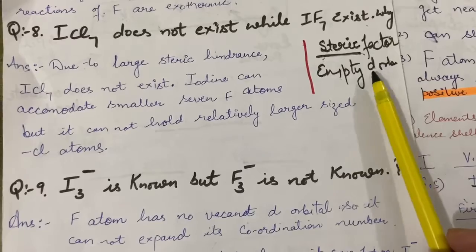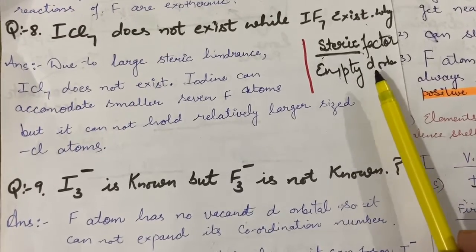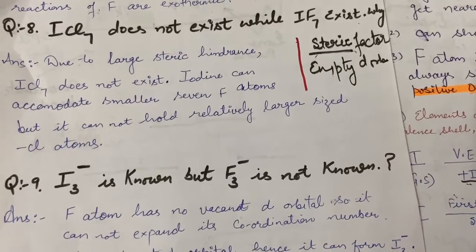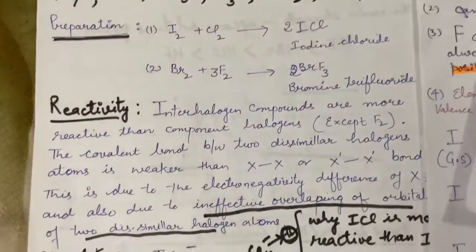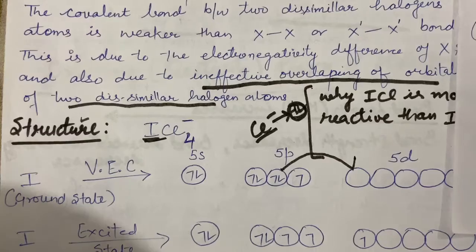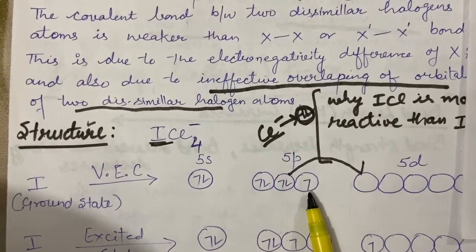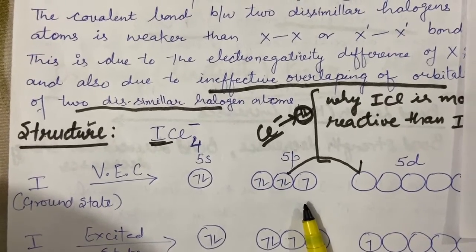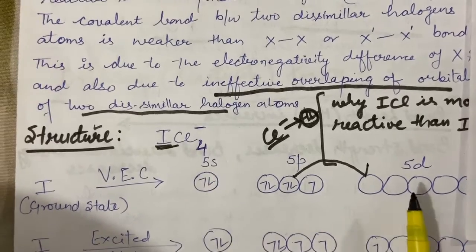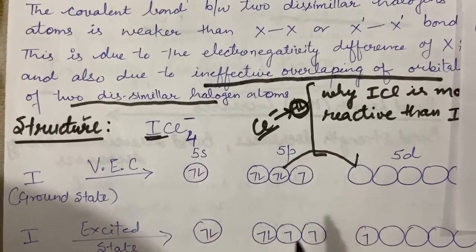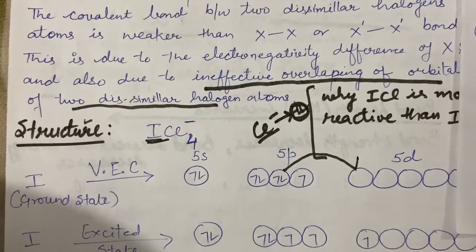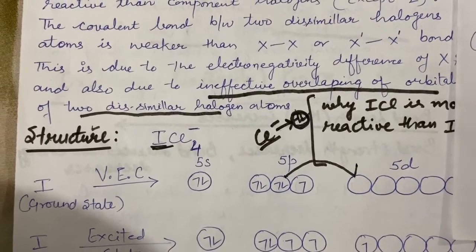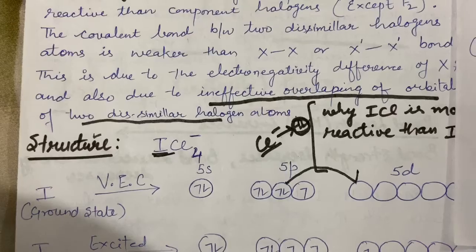The second reason is the presence of empty d-orbitals. If an empty d-orbital is present in a molecule, it can extend or expand its coordination. As we saw in ICl4⁻, Iodine had only one unpaired electron and could only form ICl, but it forms ICl4 because it has empty d-orbitals. Electrons were excited, giving three unpaired orbitals to form ICl3, then one empty d was used to form ICl4. Similarly ICl5, ICl6, and ICl7 could also form.